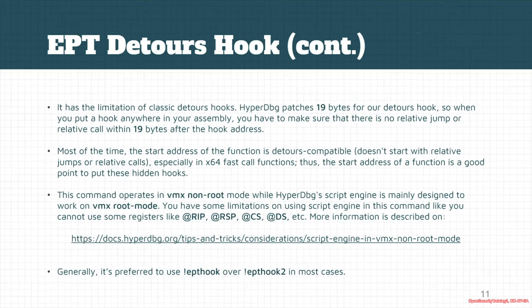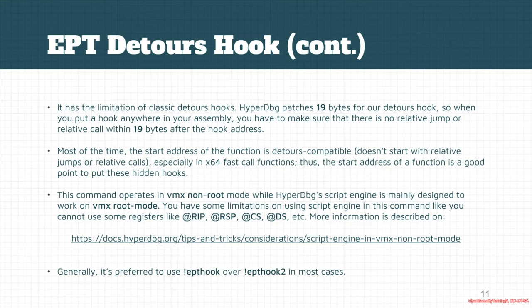Another limitation of the detour-style hook is that it patches 19 bytes from the memory. This is the classic problem of detours: you have to make sure there is no relative jump or relative call within the boundary where you want to place the hook. The good news is that in x64 fast-calling convention functions, the first 19 bytes of a function most of the time do not start with a relative jump or a relative call.